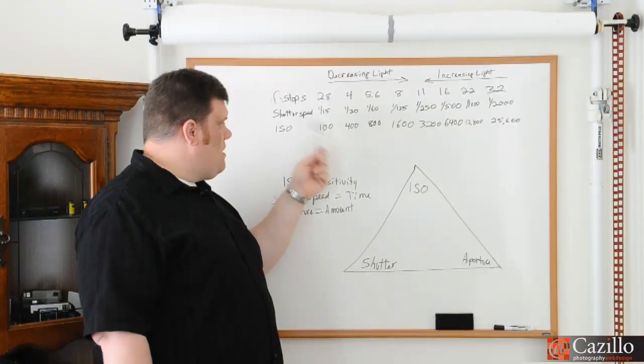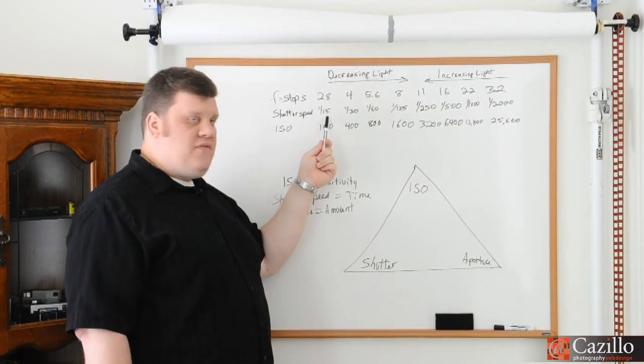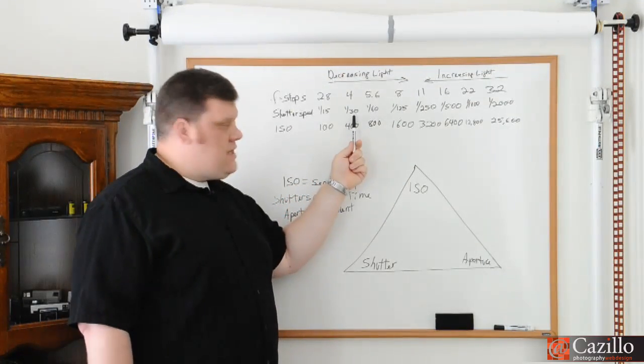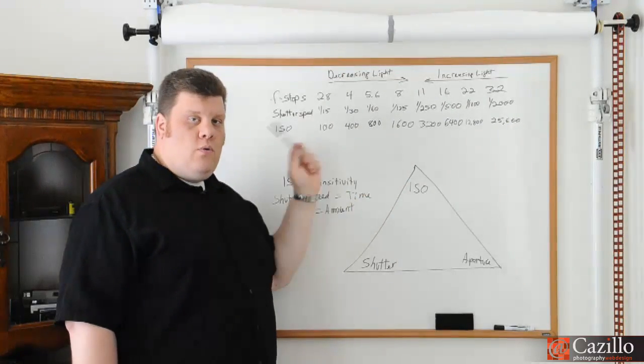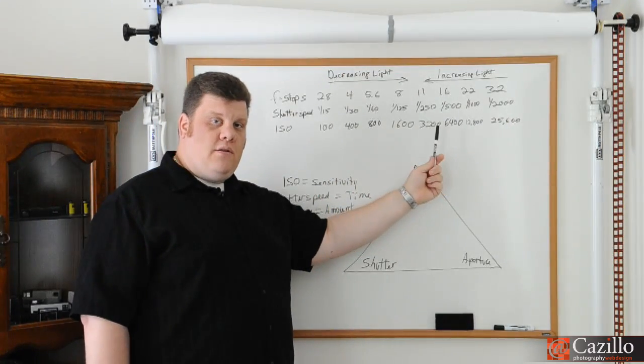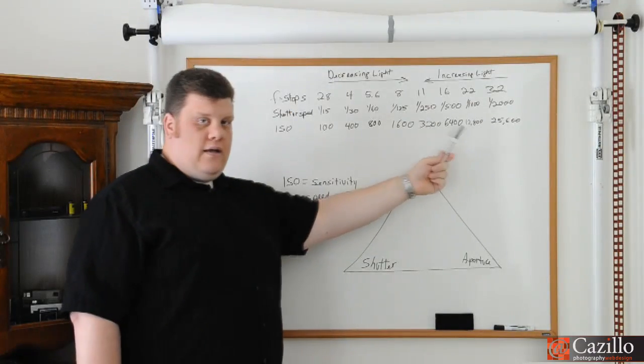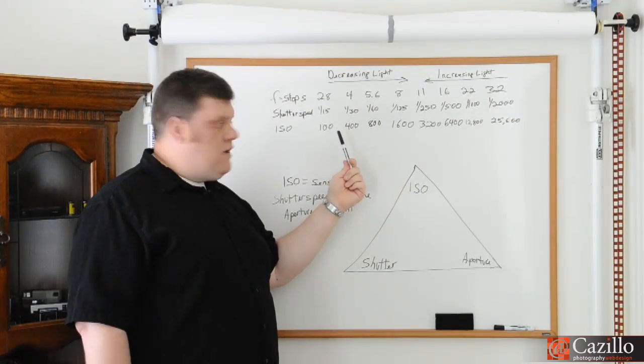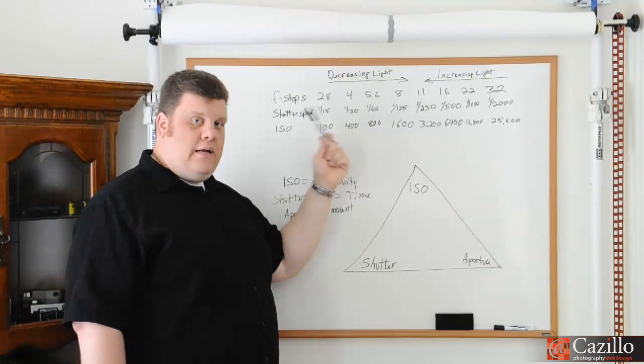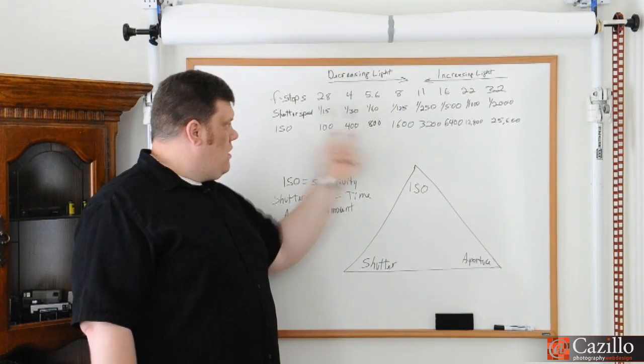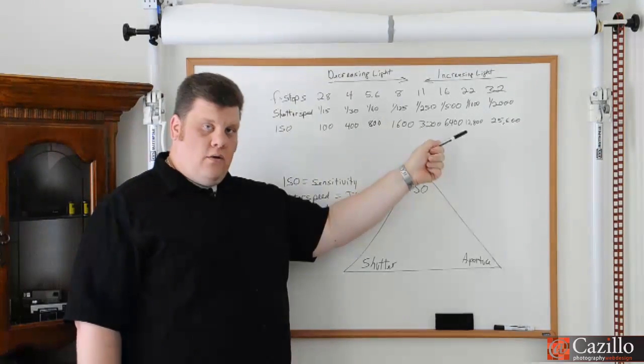So those are our primary shutter speeds. Once again, this is simple time. 1/15 of a second, 1/30 of a second, 1/60 of a second, 1/125 of a second. We're decreasing the amount of time that the image can be created in. And then inversely, we're increasing it. Increasing the time and then increasing the amount of light going this way and then decreasing going that way.